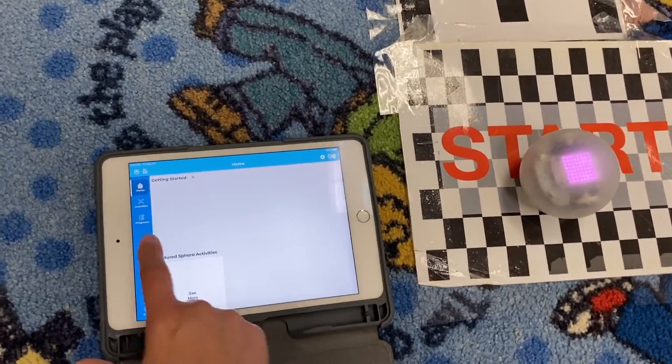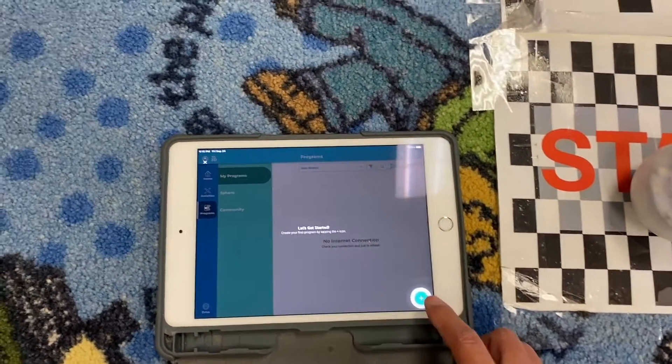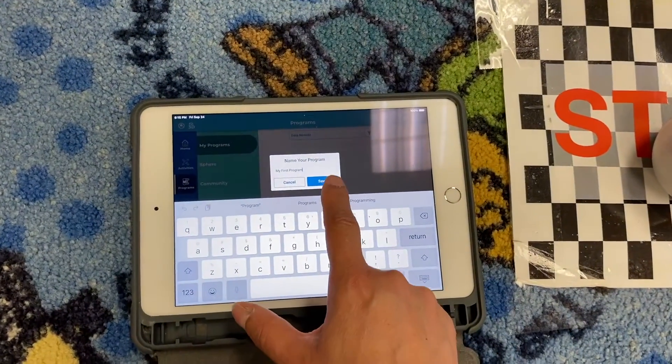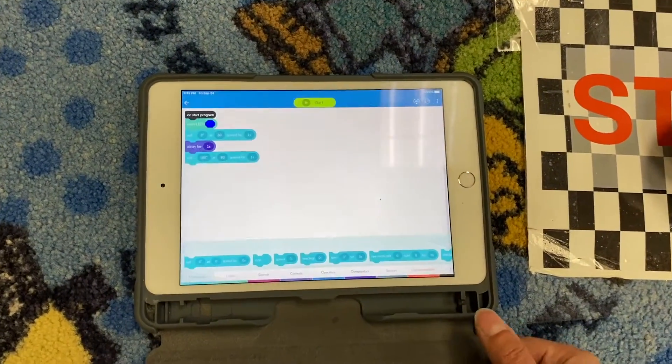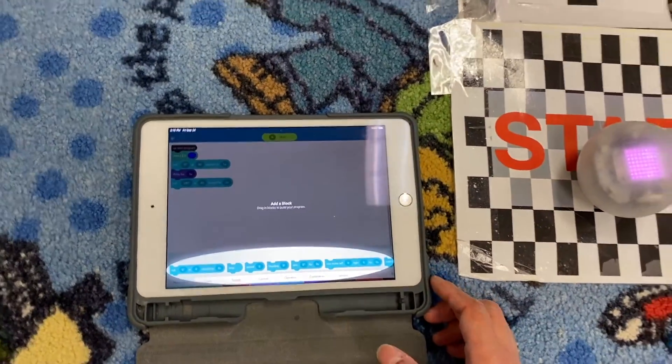You can also code your robot, so you can go ahead and go here to Programs, then press the plus right here. And it's okay, you can just leave it like that, My First Program, just to save a little bit of time. It shows you all the codes that you can use to program your robot.